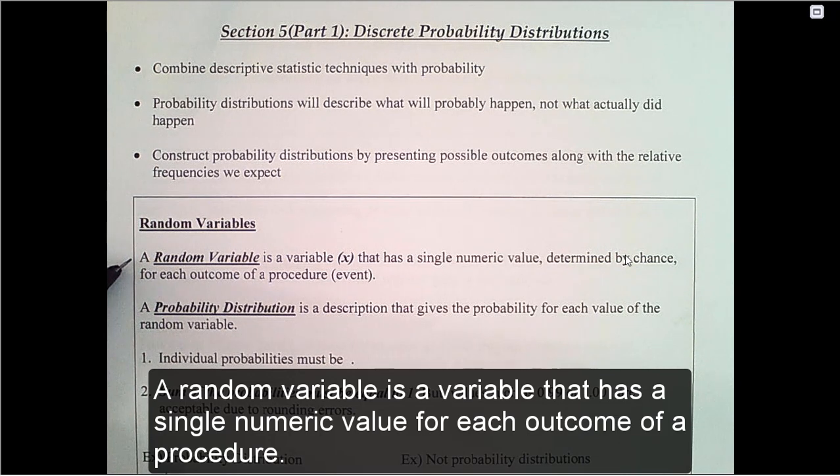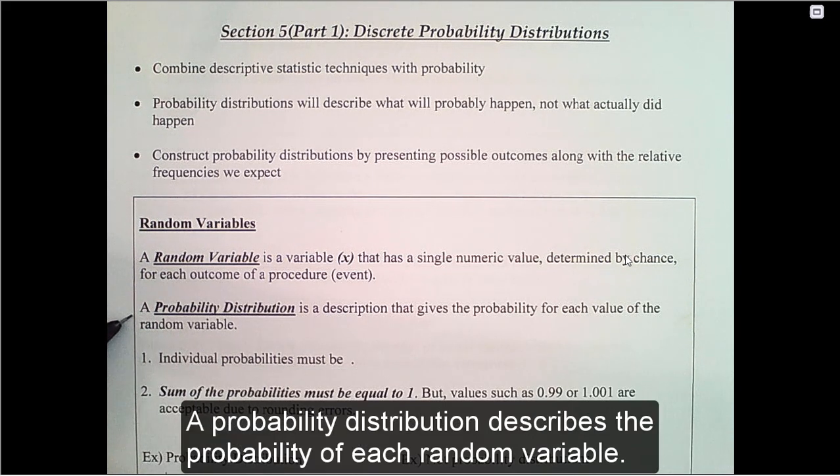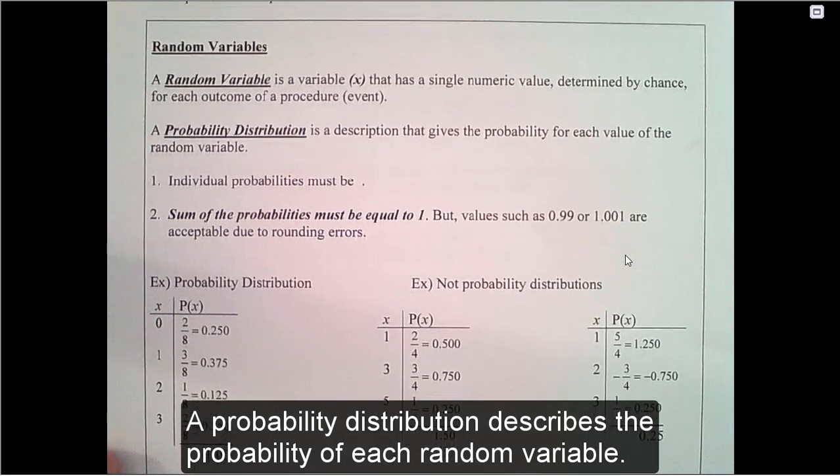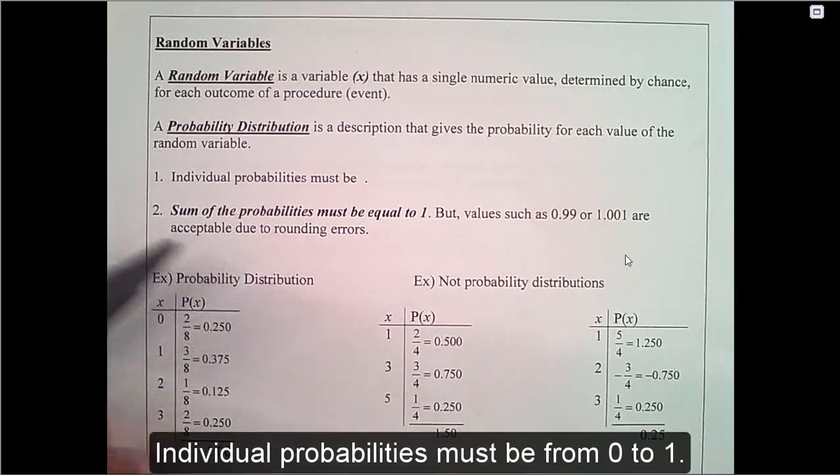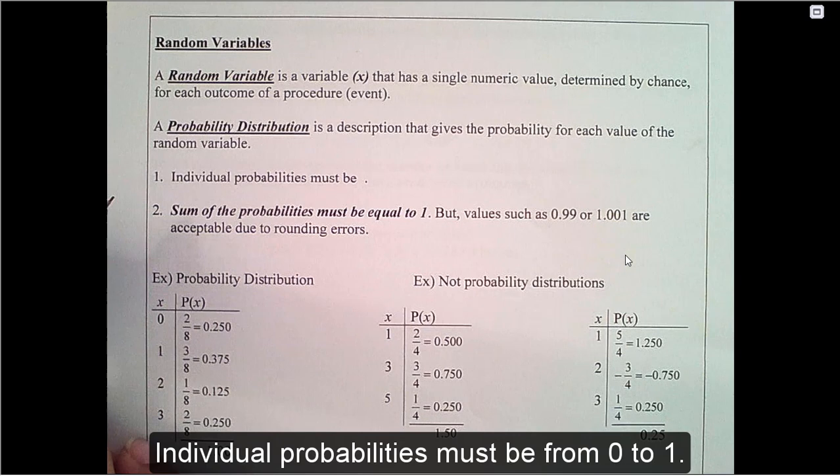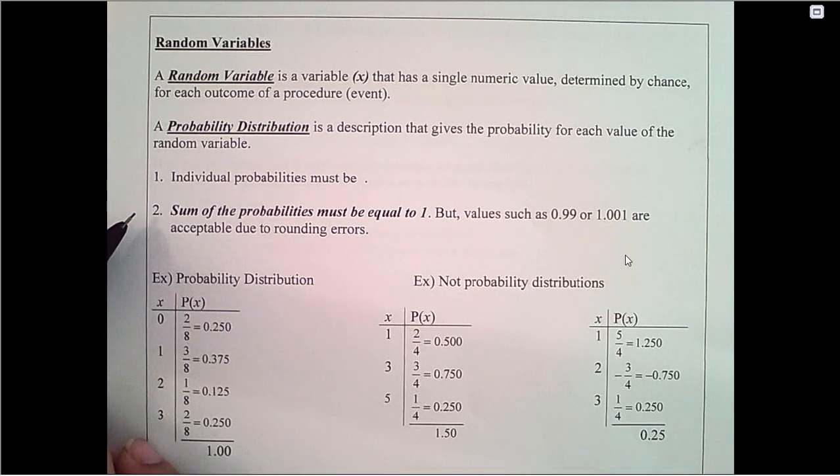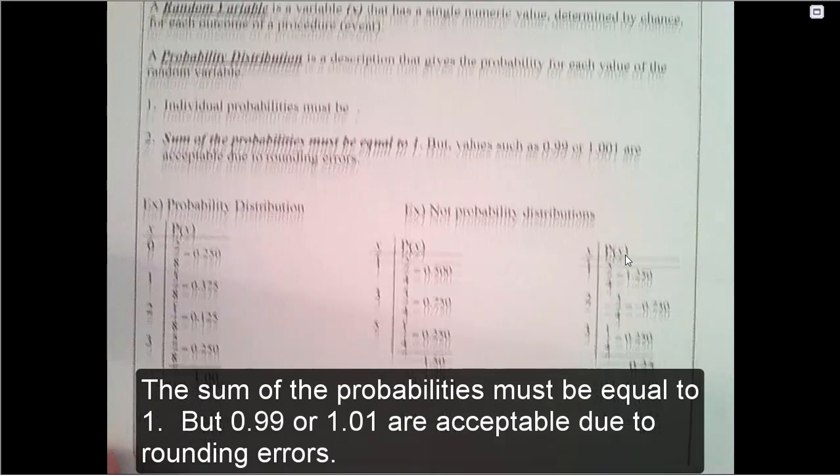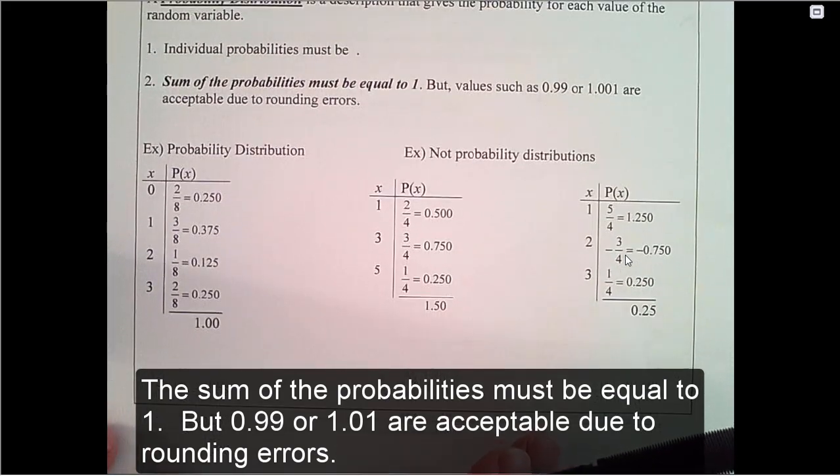A random variable is a variable that has single numeric value for each outcome of a procedure. A probability distribution describes the probability of each random variable. Individual probabilities must be from 0 to 1. The sum of the probabilities must be equal to 1, but 0.99 or 1.01 are acceptable due to rounding errors.